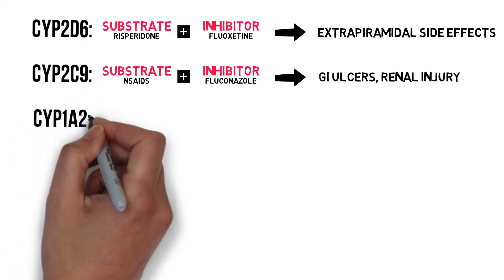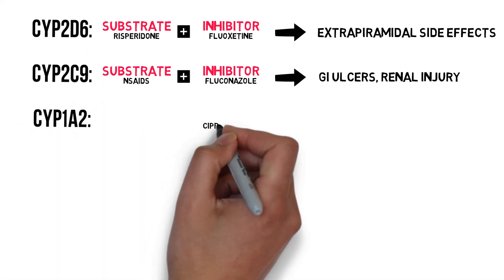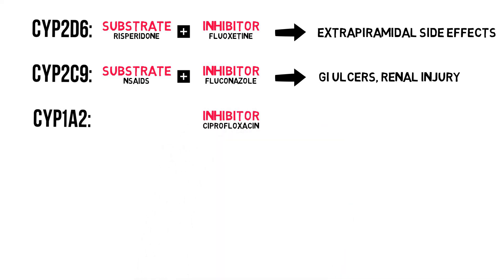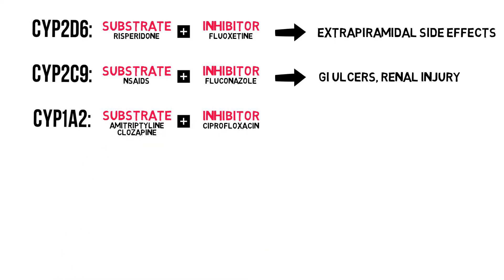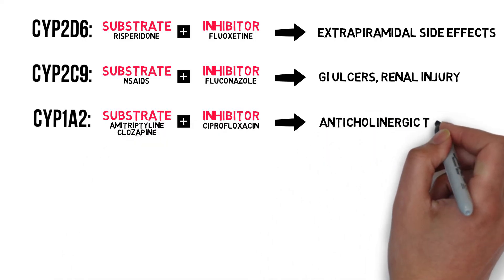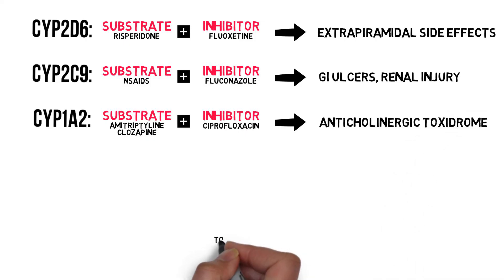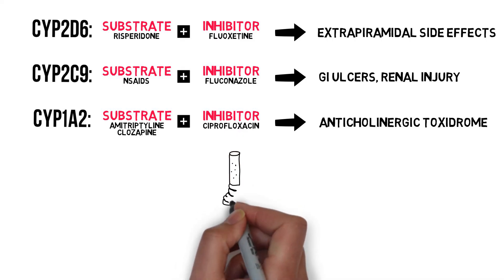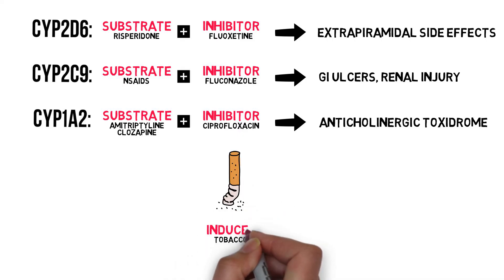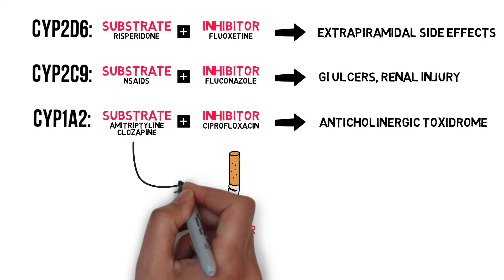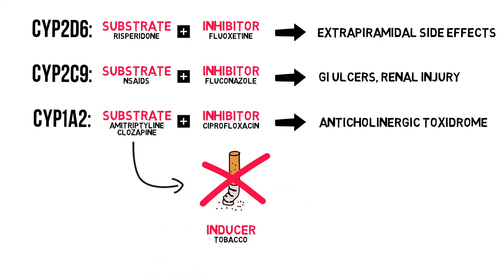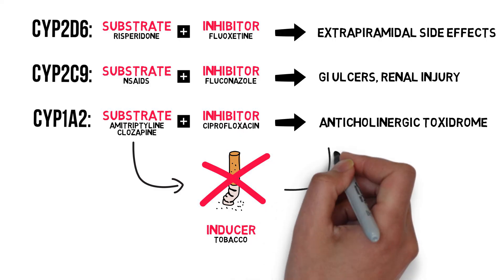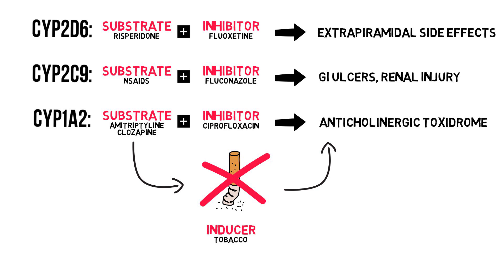For CYP1A2, it is important to know that ciprofloxacin is a strong inhibitor, causing a more than five-fold increase and thus possible toxic levels of amitriptyline, a tricyclic antidepressant, and clozapine, an atypical antipsychotic. Also note that tobacco — i.e. smoking — is a CYP1A2 inducer. This means that if your patient uses clozapine and is a smoker, once he or she quits smoking, the serum levels of clozapine will rise. This requires monitoring, and you might even want to consider a different antipsychotic agent if possible.